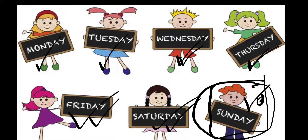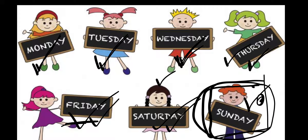So children, there are 7 days in a week. Our week starts with Monday. And after Monday, Tuesday will come. After Tuesday, Wednesday will come. After Wednesday, Thursday will come. And after Thursday, Friday will come. After Friday, Saturday. And Sunday is a family day for all of us.